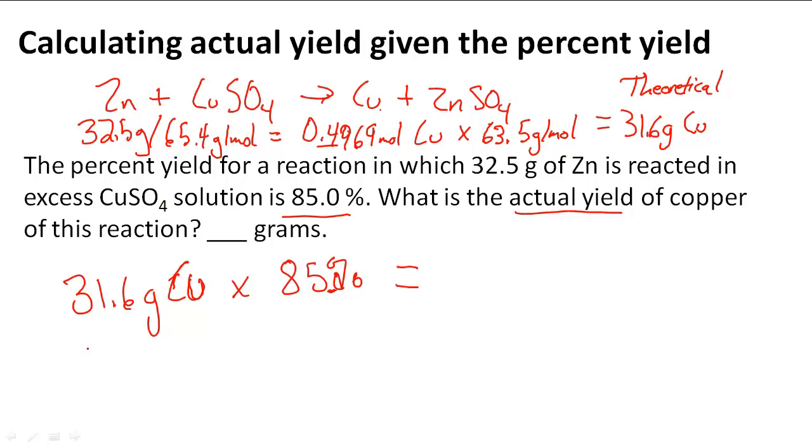When I multiply 31.6 grams of Cu times 0.85, which is the same as multiplying by 85%, we get 26.9 grams of copper, which is what's actually yielded in this reaction. 26.9 grams of copper is the answer.